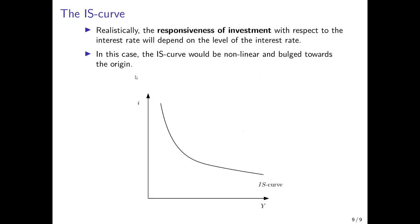Up to now, we have used linear functions to describe consumption and investment and so on, which would imply that the IS curve is also linear. But in reality, of course, it might be non-linear. The responsiveness of investment to the interest rate would itself depend on the level of the interest rate. In this realistic case, the IS curve would be non-linear and bulged towards the origin: when the interest rate is comparatively high, small changes in the interest rate do not induce large changes in output and income. By contrast, if the interest rate is comparatively low, small changes in the interest rate can have strong effects on income and investment. So a realistic IS curve would be downward sloping, but not in a linear manner.